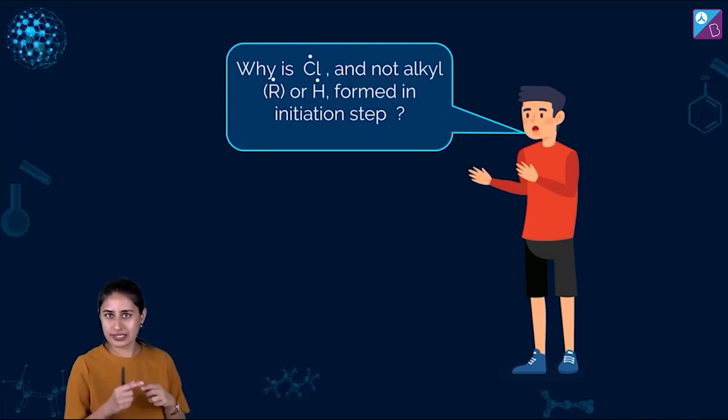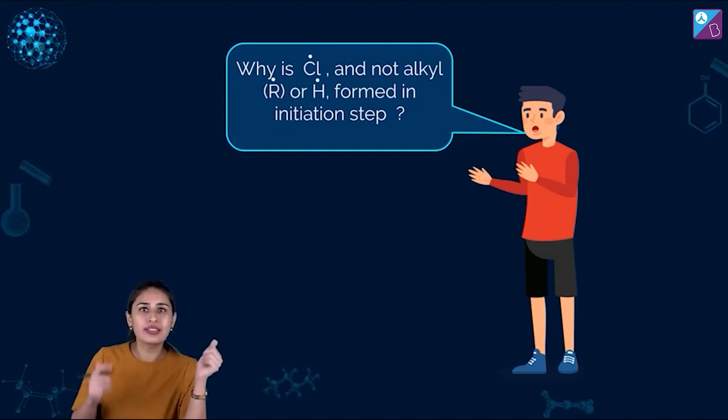Why is chlorine free radical and not alkyl free radical or hydrogen free radical formed in the initiation step or in the initial step? So this is the three free radical steps that we are talking about. Free radical mechanism may have three steps. The initiation one, we are starting with chlorine free radical or any of the halogen free radicals for that matter, but not hydrogen free radical or we are not even starting with alkyl free radical.